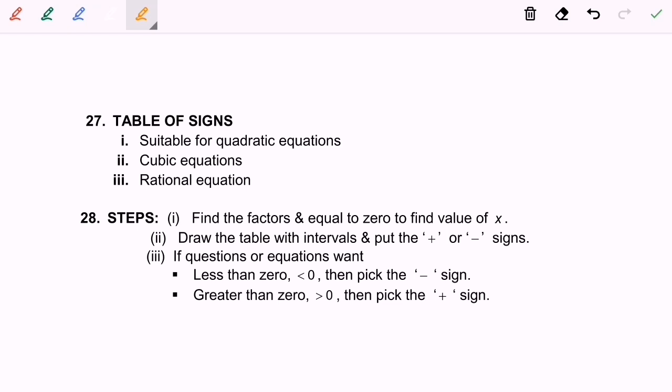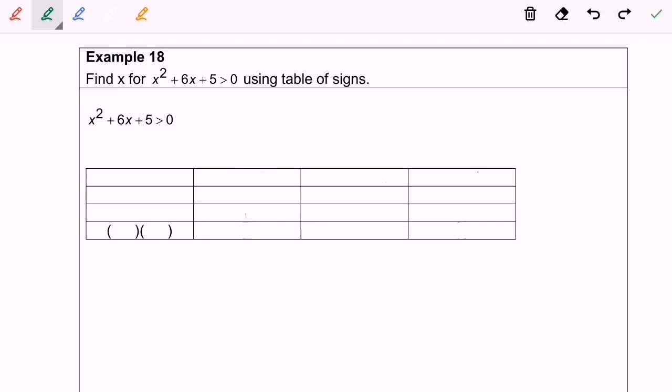I'll explain the steps in the following example. Here is Example 18: Find the value of x for x² + 6x + 5 > 0 using the table of signs.